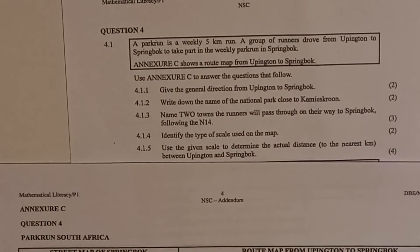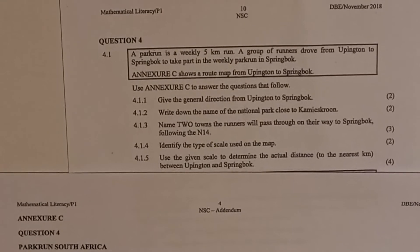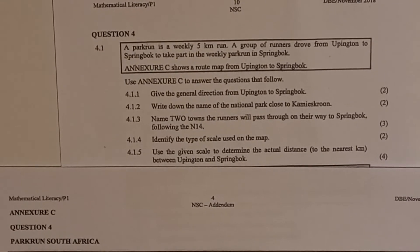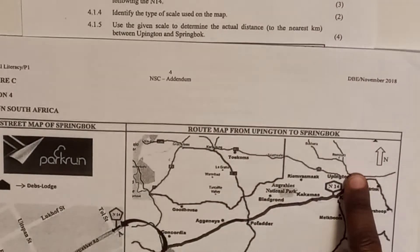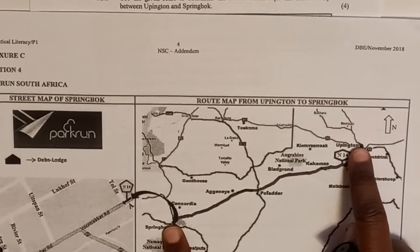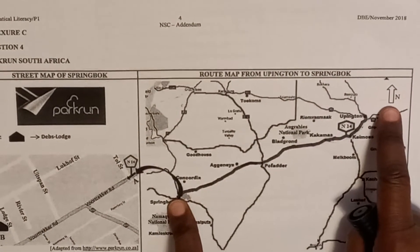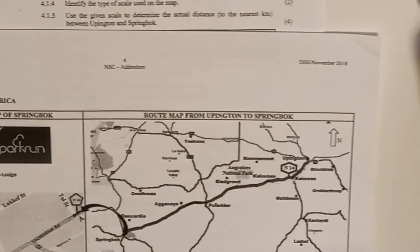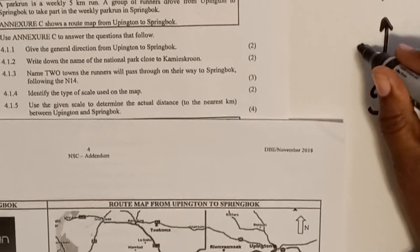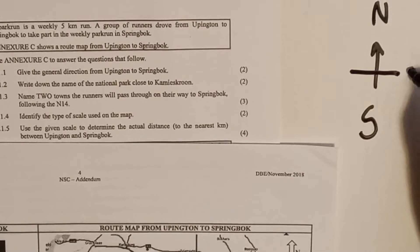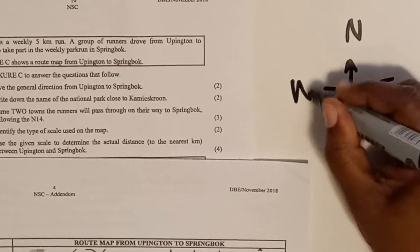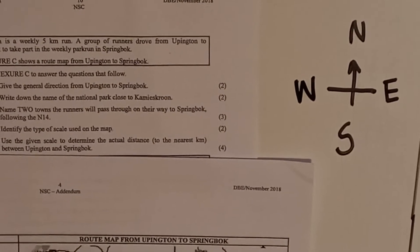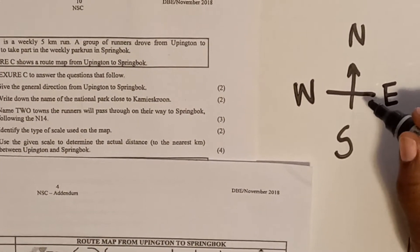Question 4.1.1 says: give the general direction from Uppington to Springbok. When you start from Uppington going to Springbok, you need to give the general direction. On the map they've given us North — North is when you're going up. So if you have North, then South is down, and you have East and West.